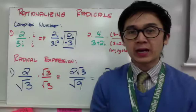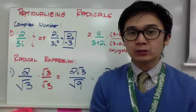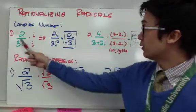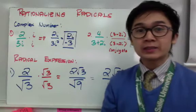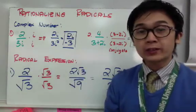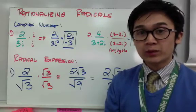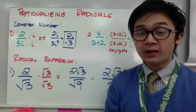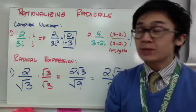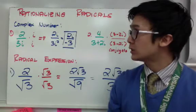Just like complex numbers, radical expressions can also be rationalized, and that's what we're going to do today. On the first two examples on the board, you've already seen expressions like these because they are complex numbers. To rationalize complex numbers, you either multiply the numerator and denominator by i, or multiply by the conjugate. The same principle applies to rationalizing radical expressions.